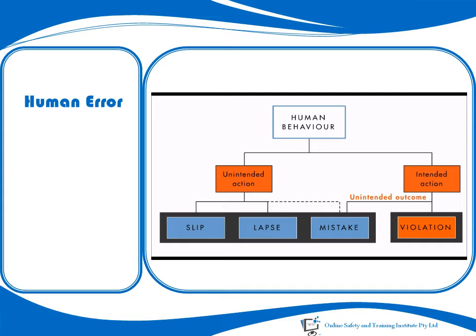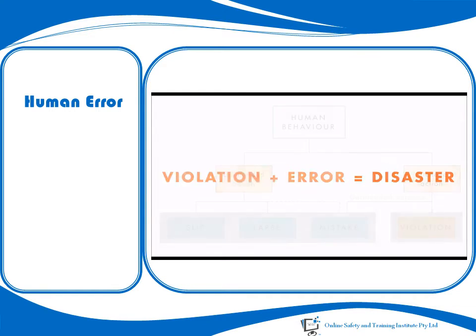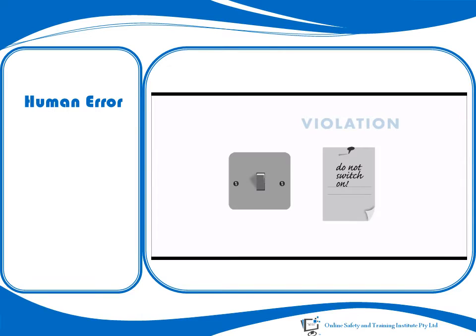Let's first look at violations in more detail. Why do we worry about violations? The answer is that there is an equation: violation plus error equals disaster. This means that it takes two components to have a disaster — someone has to be bending the rules, and someone else makes an error.